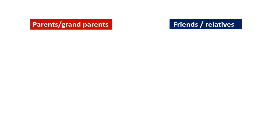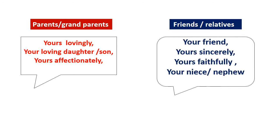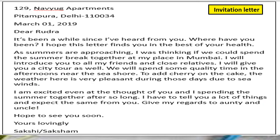When you are writing to your parents or grandparents, the subscription must be 'Your lovingly,' 'Your loving daughter or son,' or 'Your affectionate.' Use any of these proper subscriptions. But if you are writing to your friends or relatives, you can write 'Your friend,' 'Yours sincerely,' 'Yours faithfully,' or 'Your loving niece' or 'Your loving nephew.'